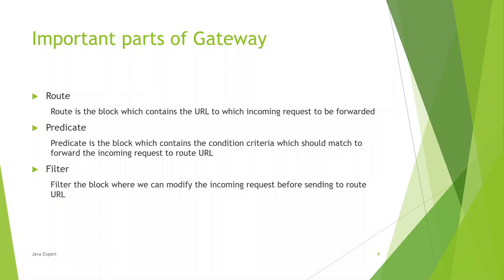There are three important parts of a gateway: Route, Predicate, and Filter. The Route is the block which contains the URL to which the incoming request should be forwarded — this is where we mention the actual microservice host and port. The Predicate is the block containing the condition criteria which must match to forward the incoming request to the route URL. The Filter is the block where you can modify the incoming request, for example modifying a parameter.